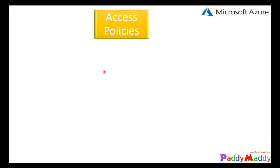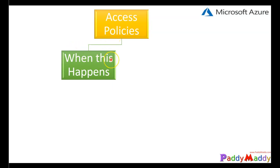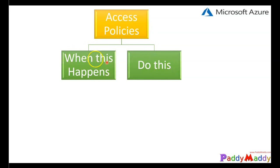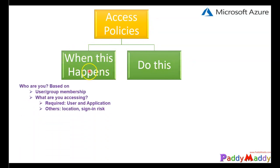The focus of conditional access policy creation is based on different criteria. The key structure is: 'when this happens, do this.' The 'when this happens' part covers who you are — your user group or membership — and what you're trying to access, such as required user applications or locations. Sign-in risk and other factors are all considered within this policy.